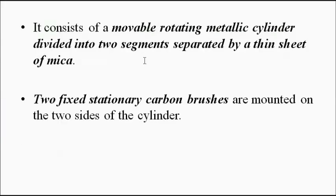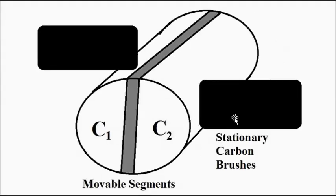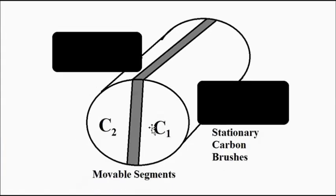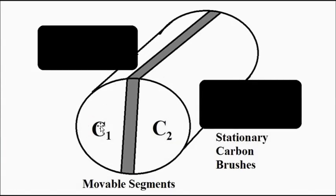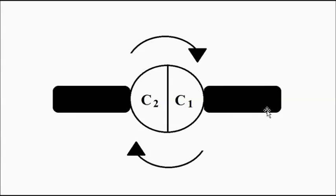The commutator consists of two cylindrical half-rings or split rings separated by a coating of mica, and they also have two brushes attached. The cylindrical segments are free to rotate but the brushes are stationary. The two rings can change their places — here it is C1, C2; there it becomes C2, C1 — but the brush remains fixed. I have posted a separate video on the commutator and brush working principle and how it converts AC into DC.